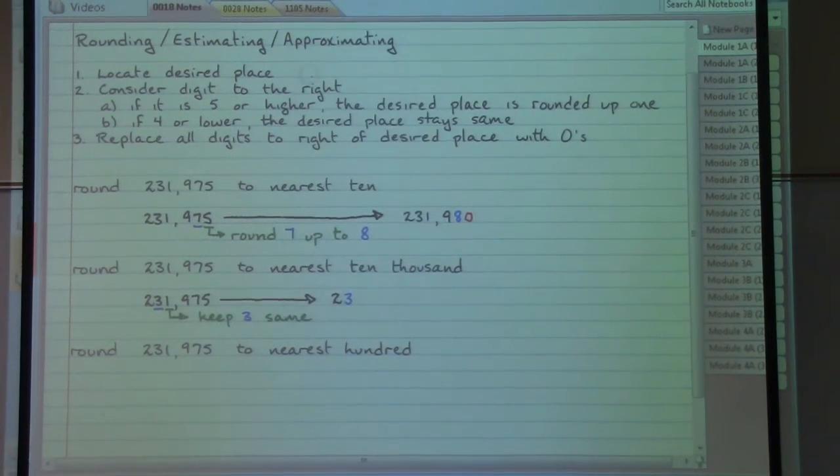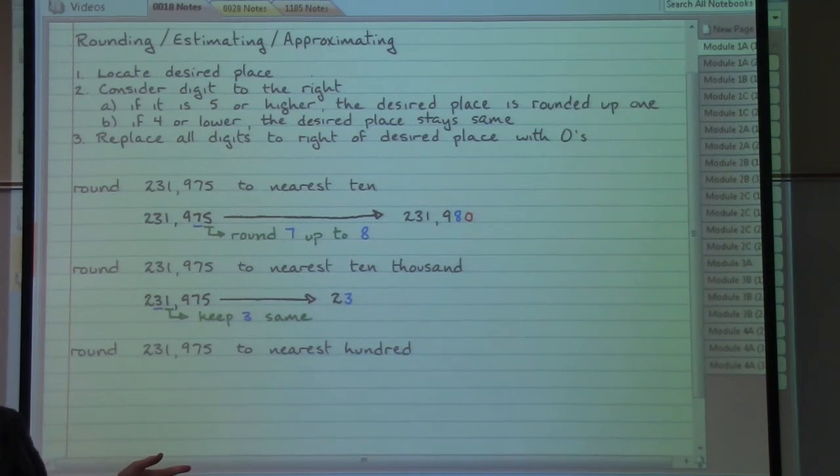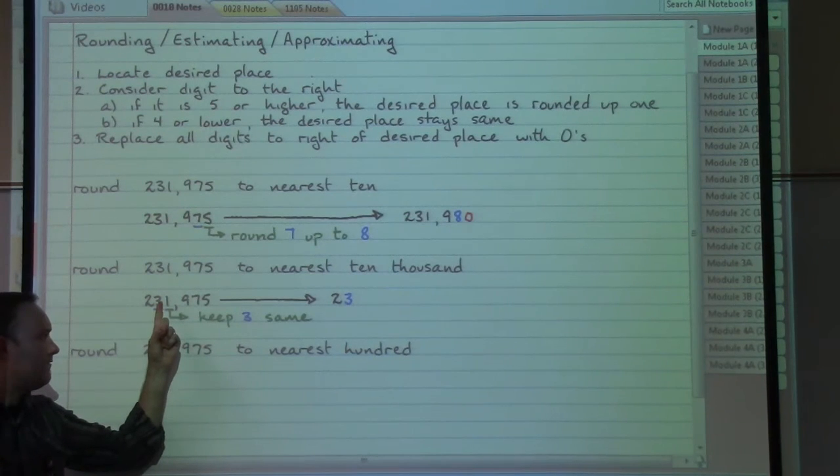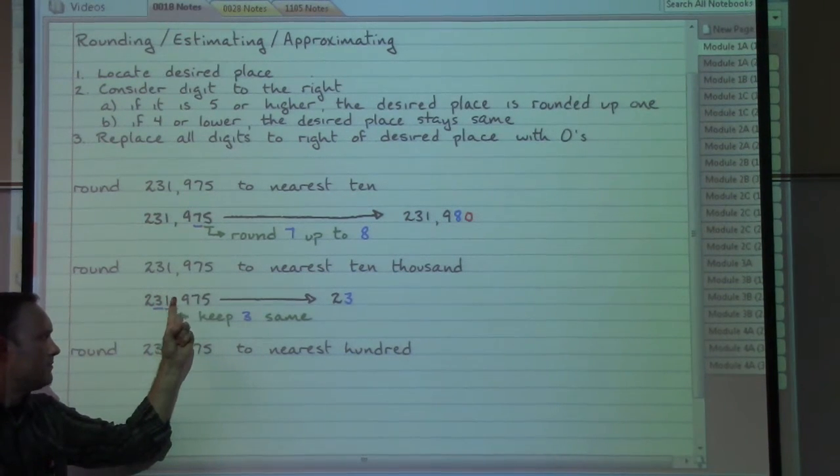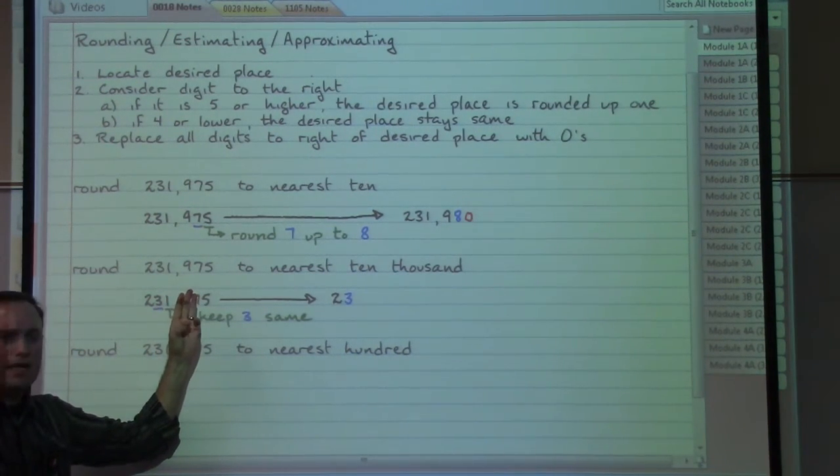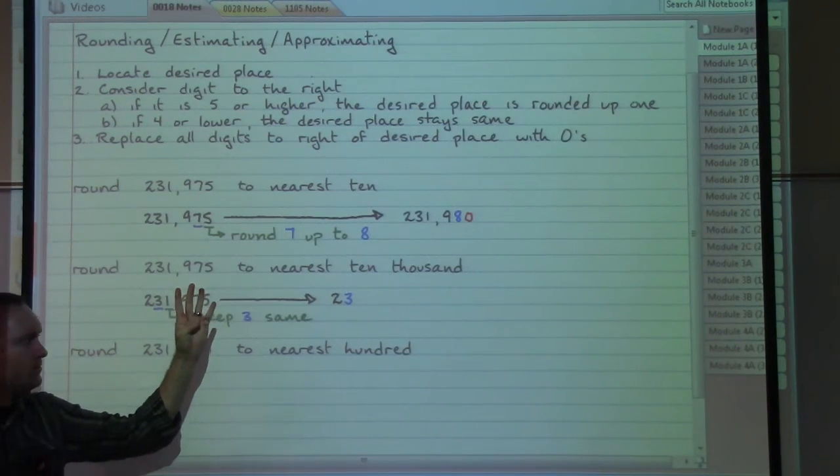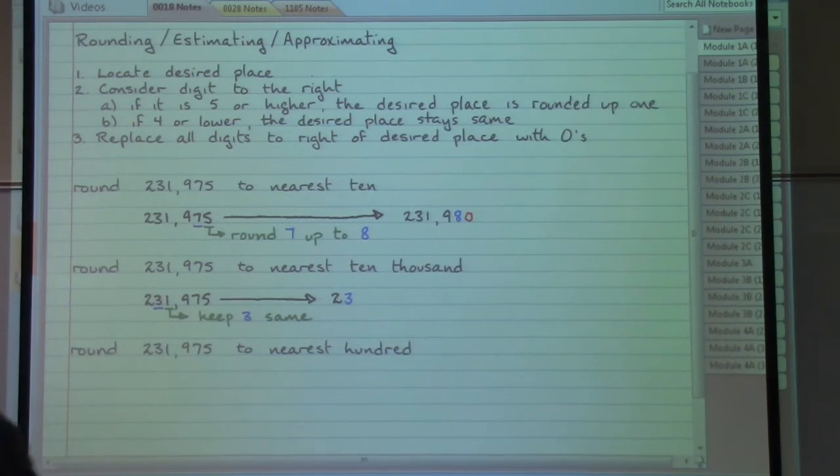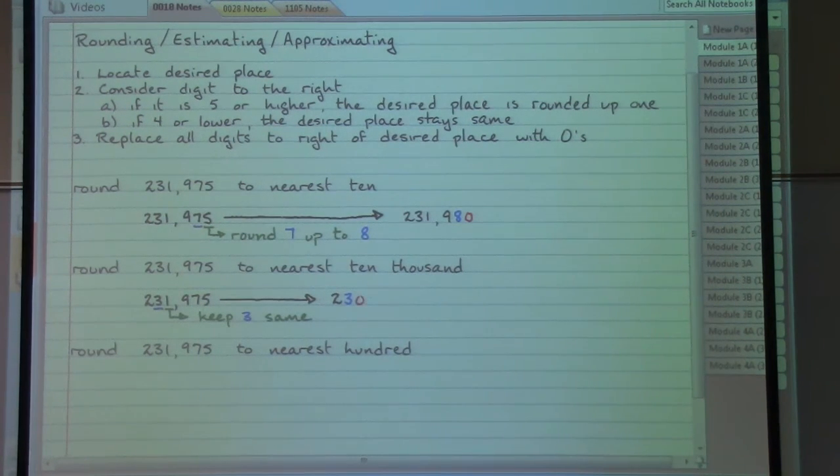And then step three says replace all the digits to the right of the three with zeros. To the right of the three we had the thousands place, hundreds place, the tens place, and the ones place. So we've got to put in here four zeros to complete our answer: one, two, three, four. And if you want, you throw a little comma in there.